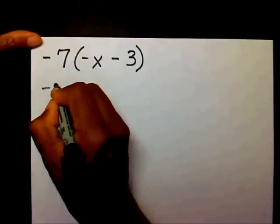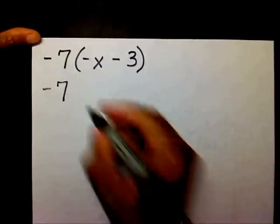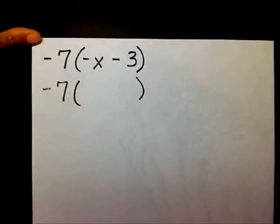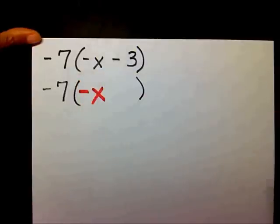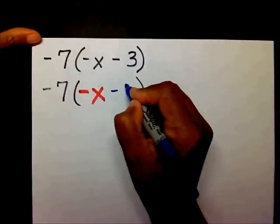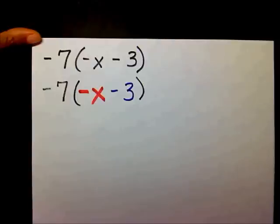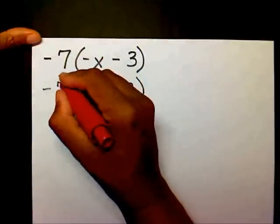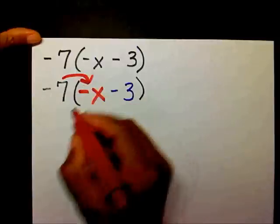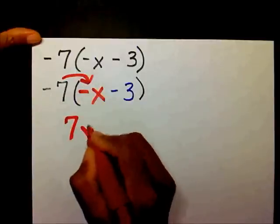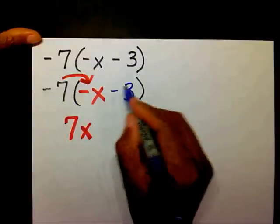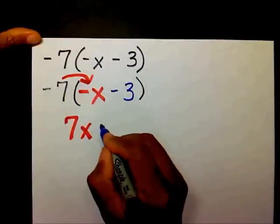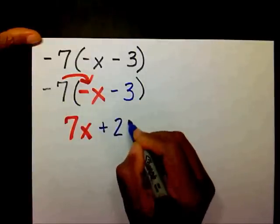Welcome back. We have negative 7 times negative x minus 3. I'm going to multiply negative 7 times negative x, and that gives me positive 7x. Then I'm going to multiply negative 7 times negative 3, and that gives me positive 21. So the final answer is 7x plus 21.